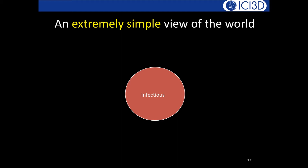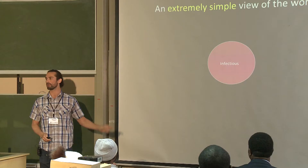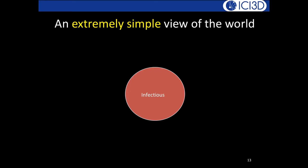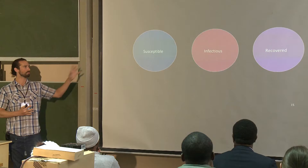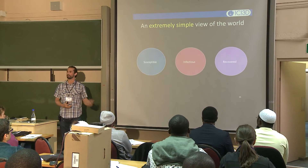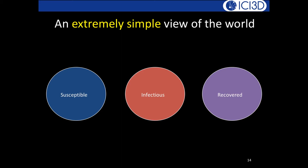We have an infectious compartment representing the number of people currently infectious in a population. We also have two other compartments: susceptible people and recovered/immune people. These give us three groups, and we'll consider how people flow between them.